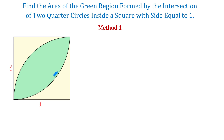This one is the first quarter circle, and this one is the second one. To solve this problem, we will use three different methods, and let's start with the first one.